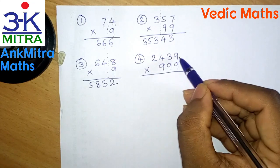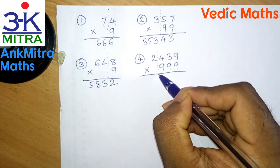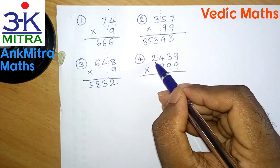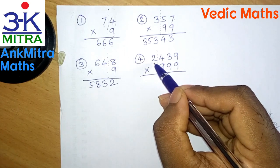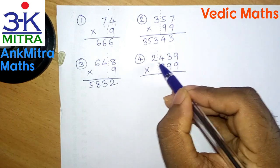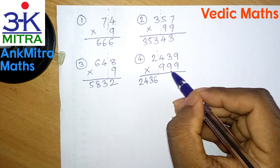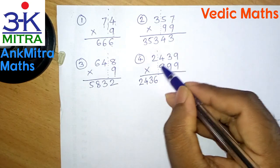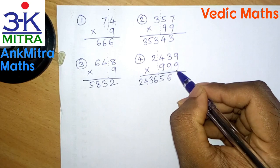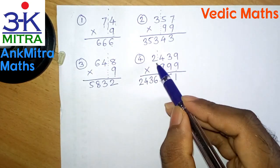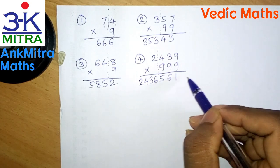Now let's look at the fourth example — a four-digit number multiplied by 999. We draw a partition line next to the three digits. We are left with a single digit on the left of the partition line in the multiplicand, which is 2. We increase that by 1 to get 3, then subtract 3 from the entire multiplicand: 2439 minus 3 gives us 2436. For the final step we subtract 439 from 1000: 9 minus 4 is 5, 9 minus 3 is 6, and 10 minus 9 is 1. So the final answer for 2439 multiplied by 999 is 24,36,561.